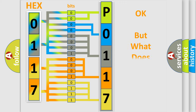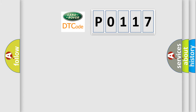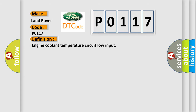The number itself does not make sense to us if we cannot assign information about what it actually expresses. So, what does the Diagnostic Trouble Code P0117 interpret specifically for Land Rover car manufacturers? The basic definition is: Engine Coolant Temperature Circuit Low Input. And now this is a short description of this DTC code.